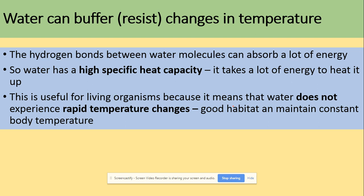Water can buffer or resist changes in temperature because the hydrogen bonds between water molecules can absorb a lot of energy. Water has a high specific heat capacity — it takes a lot of energy to heat it up. This is useful for living organisms because water does not experience rapid temperature changes, making it a good habitat and helping organisms maintain a constant body temperature.